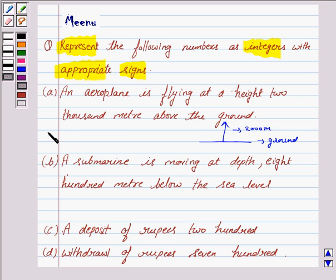That means, the answer is plus 2000, because it is flying above the ground.